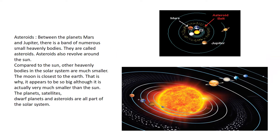Now we will see what are asteroids. Between the planets Mars and Jupiter, there is a band of numerous small heavenly bodies. They are called asteroids. Asteroids also revolve around the sun. In the picture, we can see the band of asteroids between Mars and Jupiter.